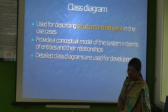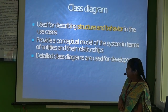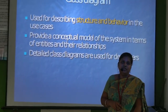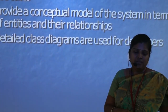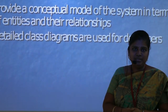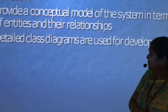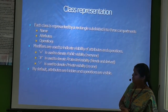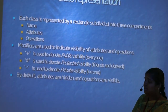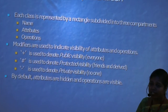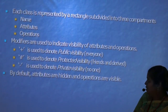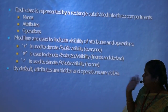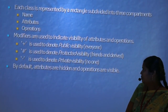Next is the class diagram. It provides the structure of the behavioral aspects as well as the use cases. Each class is represented by a rectangle divided into three compartments. The first compartment is the class name, the second is the attributes, and the third is the operations. By default the visibility is public. The plus symbol is used for public visibility, the hash for protected, and the minus symbol for private visibility.